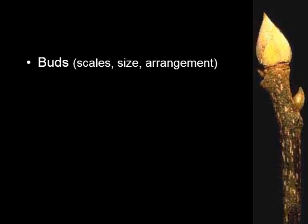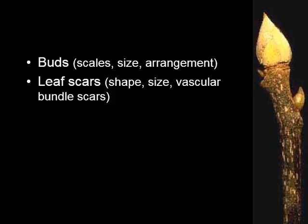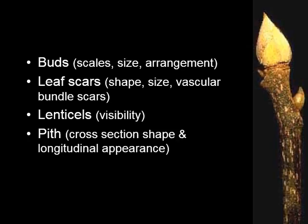You can use twigs for identification by looking at the buds. The arrangement, shape, and size of buds can determine the type of tree you're identifying. Leaf scars are where last year's leaves were attached to the twig — the shape, size, and the little bundle scars in them can help you identify the tree. Whether lenticels are present or not — these are little spots on the bark of the twig; they're pores that provide exchange of gases between the internal tissues and the atmosphere. The presence and shape of them can help with tree identification. And if you take a cross-section of the twig, the pith or center of the twig when you cut it open can help you identify what type of tree it is.